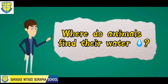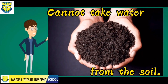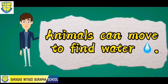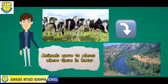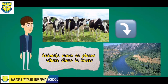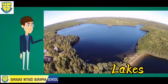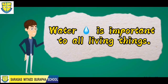Where do animals find their water? Animals cannot take water from the soil, but animals can move to find water. Animals move to places where there is water — just like puddles, lakes, and rivers. And always remember, water is important to all living things.